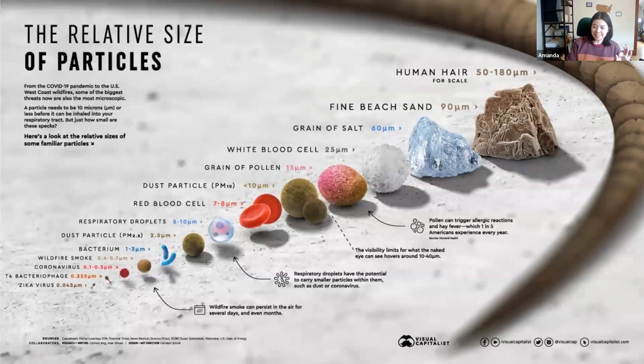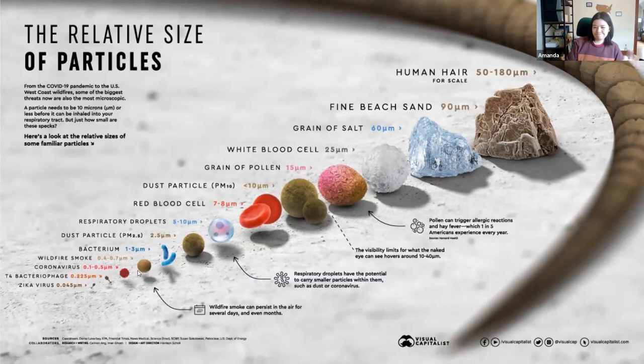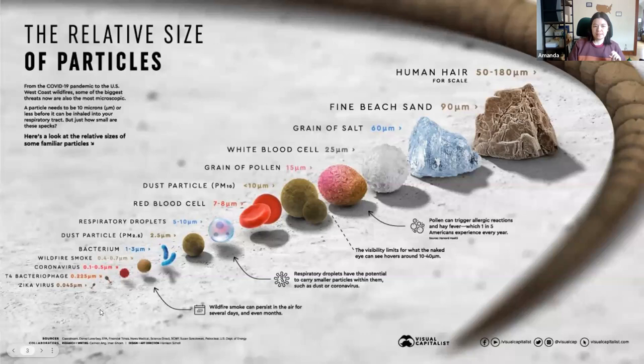Viruses are very, very tiny. Tim showed this visual last time as well. This brown thing is a human hair, and viruses are very, very small — about 0.1 micrometers or smaller. The Zika virus is not the smallest virus, but it is in this representation. Influenza kind of falls in between Zika and bacteriophages.